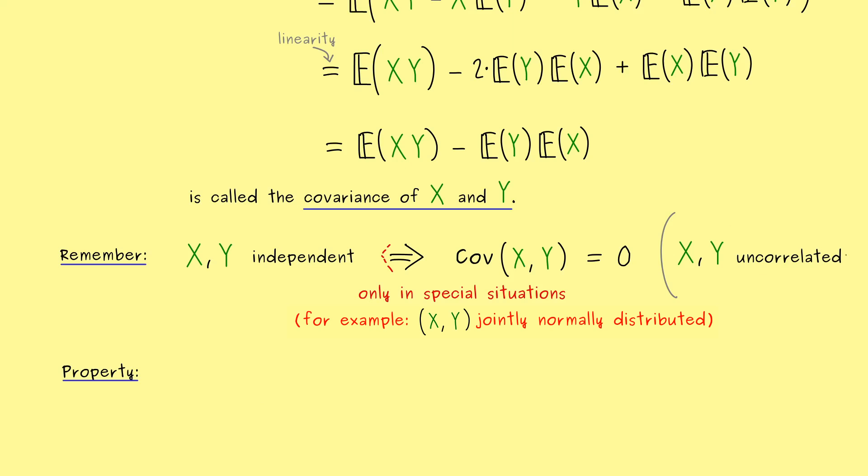Indeed, this is a definition we can put here, if the covariance is zero, X and Y are called uncorrelated. So we already know, this new notion is weaker than the notion independence.